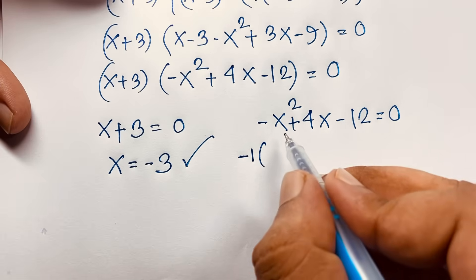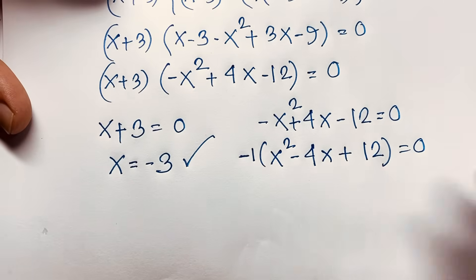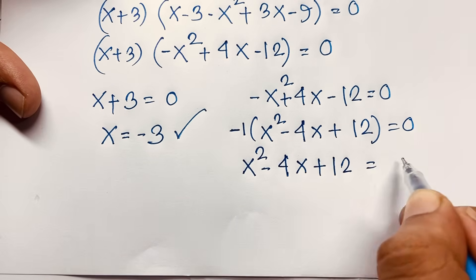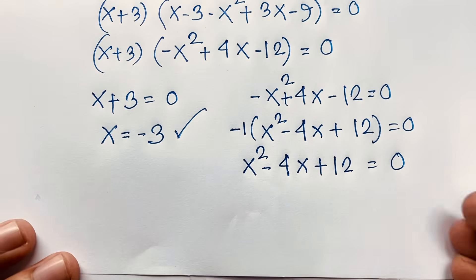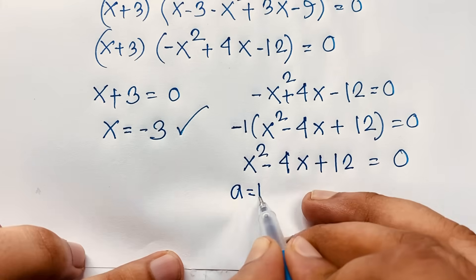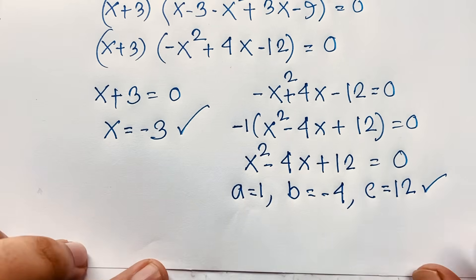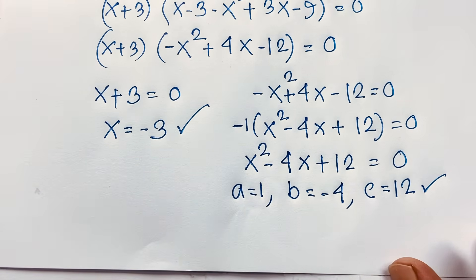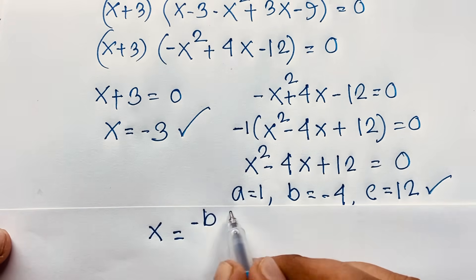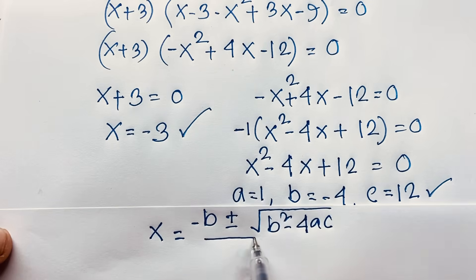For the second case, I multiply both sides by negative 1. So it becomes x squared minus 4x plus 12 equals 0. This is a nice quadratic equation. Here a equals 1, b equals negative 4, and c equals 12. We apply the quadratic formula: x equals negative b plus or minus square root of b squared minus 4ac, all over 2a.